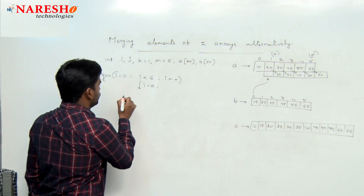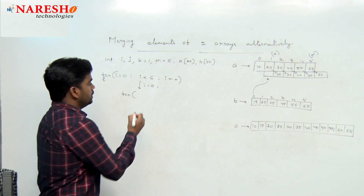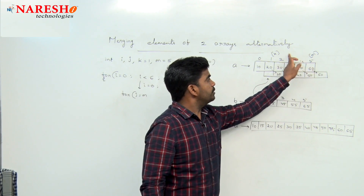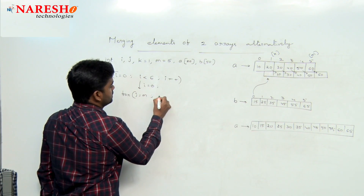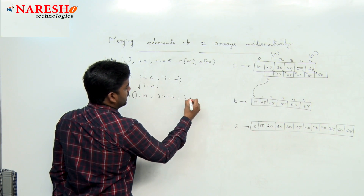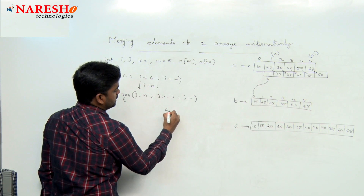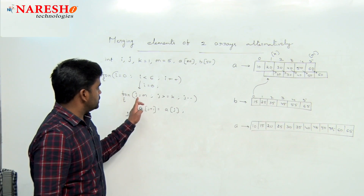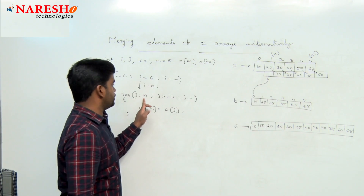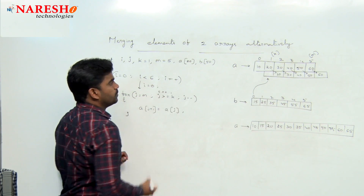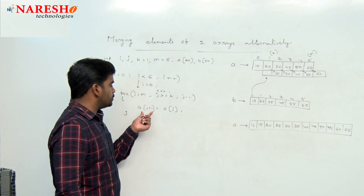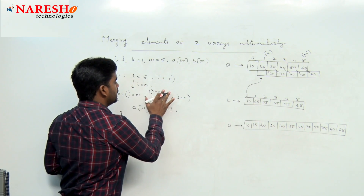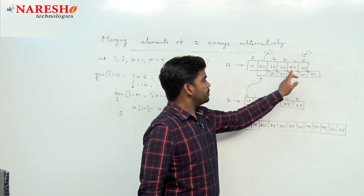How to shift? Take an inner for loop: j starts with m (which is 5), j is greater than or equal to k, j minus minus. Inside the loop: a[j+1] = a[j]. So j starts at 5, 5 >= 1 is true, so the 5th location element goes to the 6th location, then 4, 3, 2, 1 — repeating 5 times. So 5 elements will shift using the inner loop.